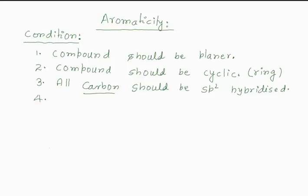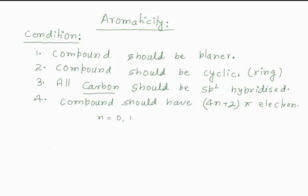The next important condition is that the compound should have 4n+2 pi electrons, where n is 0, 1, 2, 3 — these are integers. So these are the 4 conditions that must be satisfied: the compound should be planar, cyclic, all atoms sp2 hybridized, and it should have 4n+2 pi electrons. This is also called Hückel's rule.